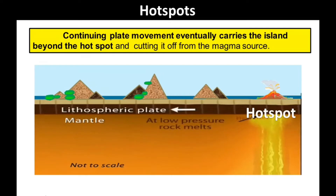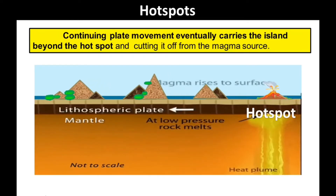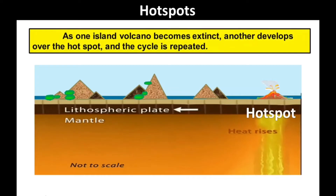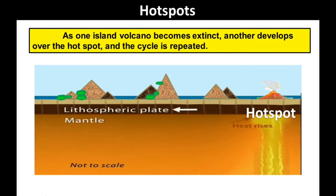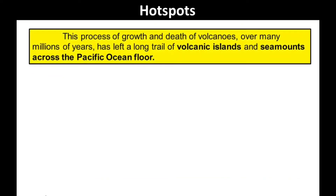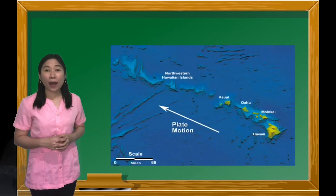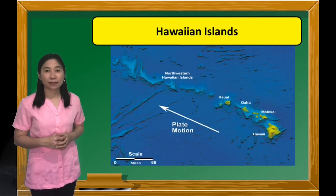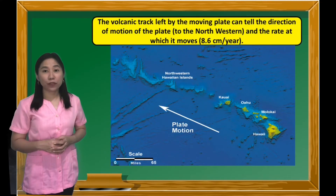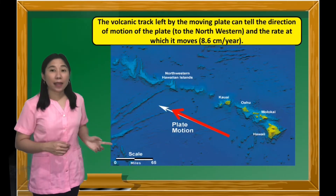Continuing plate movement eventually carries the island beyond the hotspot, cutting it off from the magma source. As one island volcano becomes extinct, another develops over the hotspot, and the cycle is repeated. This process of growth and death of volcanoes over many millions of years has left a long trail of volcanic islands and seamounts across the Pacific Ocean floor. The best example of a hotspot volcanic chain is the Hawaiian islands. From the volcanic track left by the moving plate, we can tell the direction of motion of the plate and the rate at which it moves.